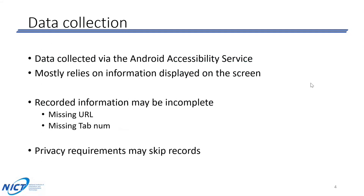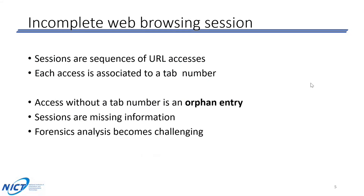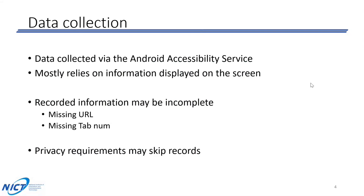The sensor relies on the Android accessibility service, which mostly relies on information shown on the screen. Everything visible to the user is usually accessible by the accessibility service. However, sometimes when collecting information—especially regarding web accesses—you may miss the URL shown on screen because the app doesn't allow URL display, or you might miss the tab number, which is the identifier of the tab in which the web access was made. This can lead to incomplete data collection.